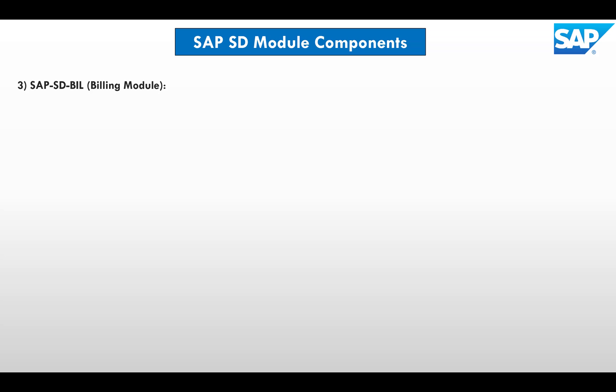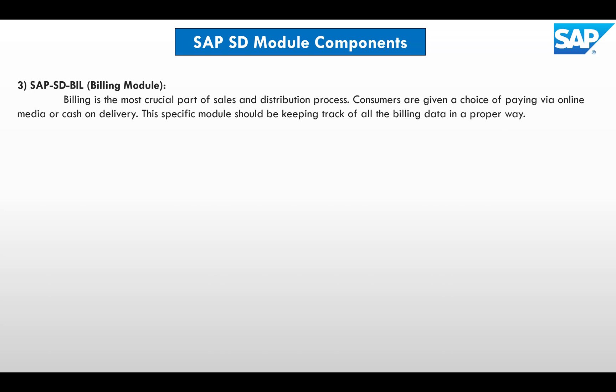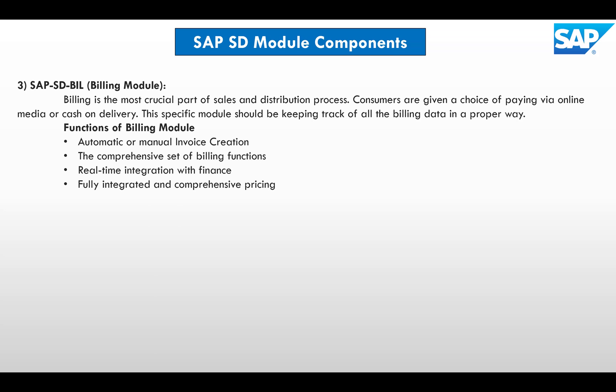Next we have the SAP Billing module, which is one of the most crucial parts of the sales and distribution process. Consumers are given a choice of paying via online or through cash at the time of delivery. This module keeps track of all billing data in a proper way. The major functions of the billing module include automatic or manual invoice creation based on configuration, a comprehensive set of billing functions, real-time integration with finance, and fully integrated comprehensive pricing.